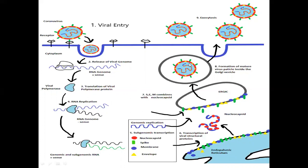In the Golgi bodies, the nucleocapsids combine with the other viral proteins — S (spike), E (envelope), and M (membrane). The matured viral particles are then transported out of the cells with the help of Golgi vesicles. Once packed with the nucleocapsid, spike protein, membrane protein, and envelope proteins, the mature viral particles move to the cell surface and are released outside the cell by the process of exocytosis. This is the entire infection cycle of the coronavirus once it attacks our pneumocytes.